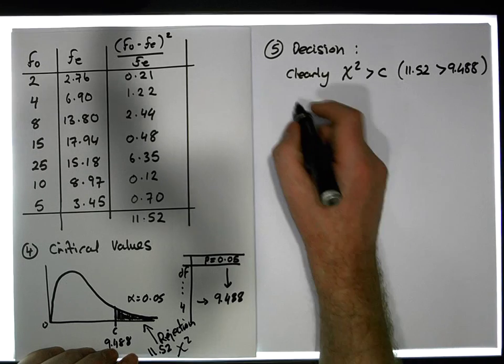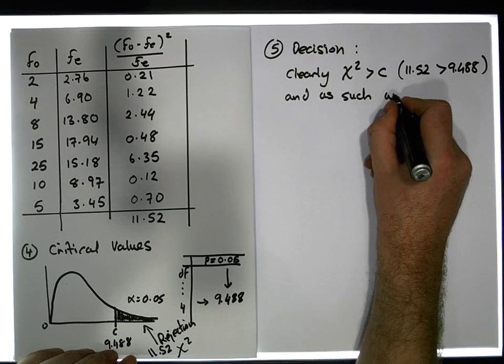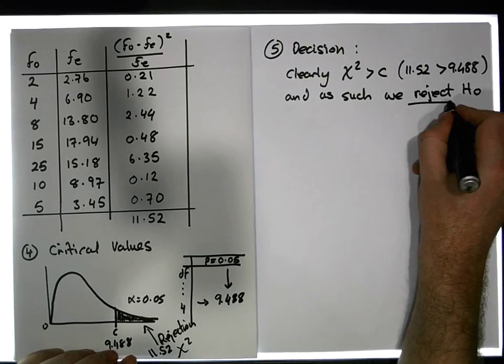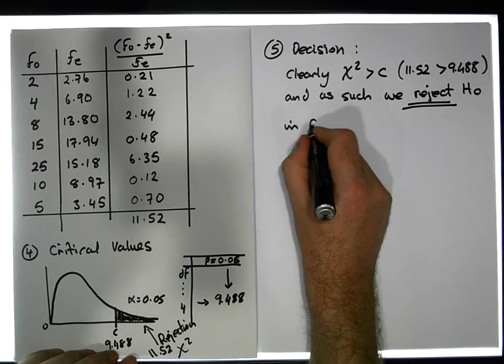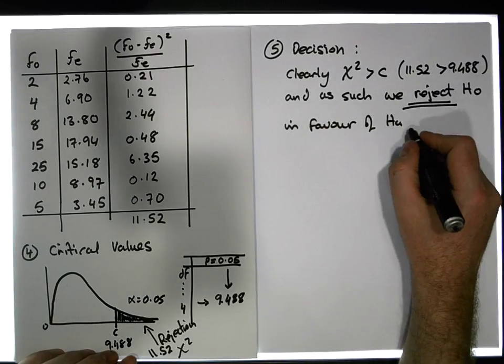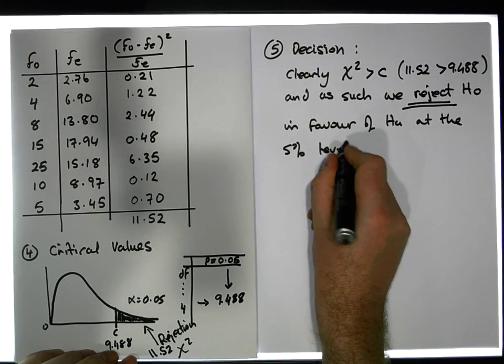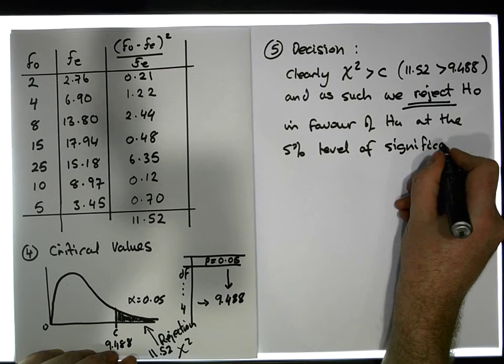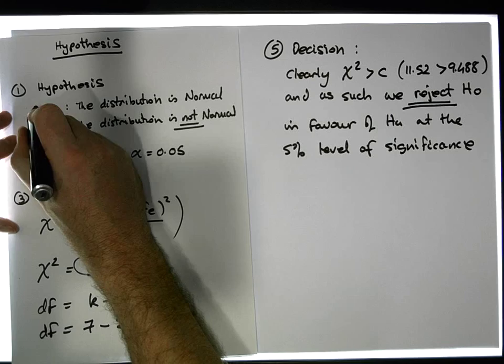And as such, we reject H₀ in favor of Hₐ, the alternative, at the five percent level of significance.